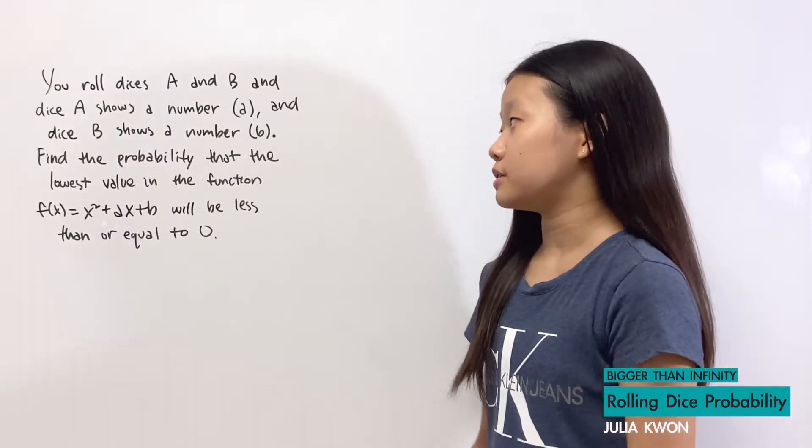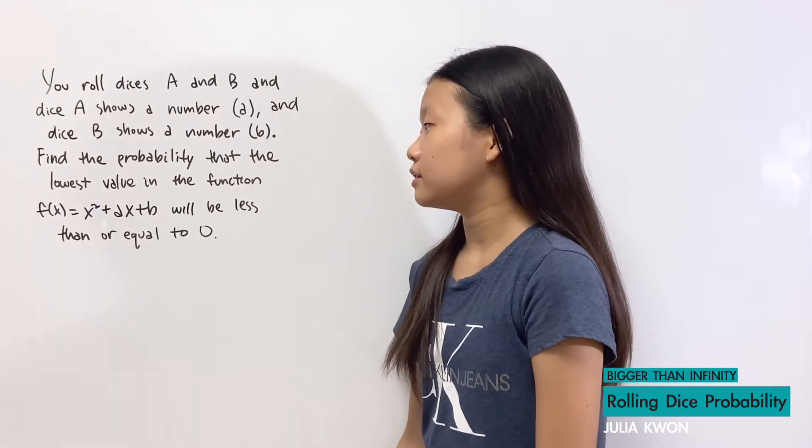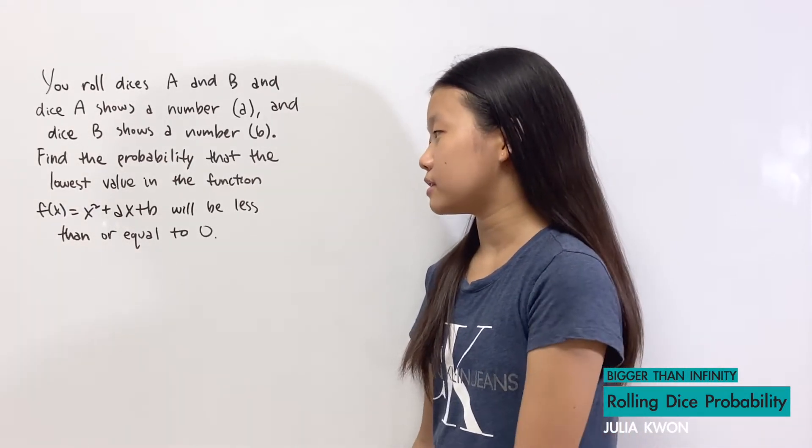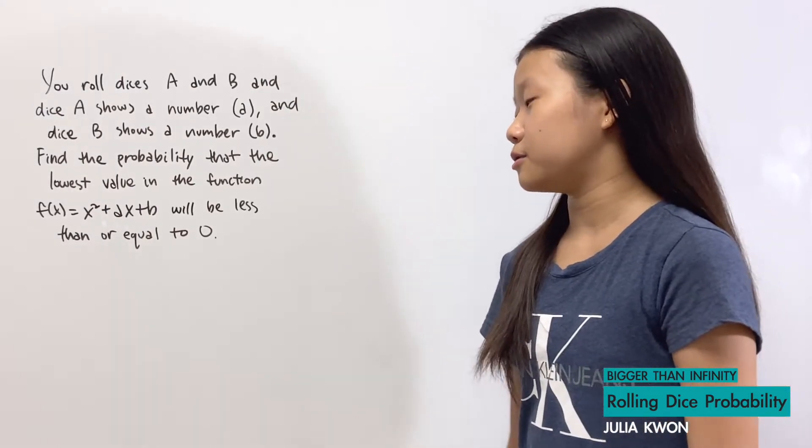Find the probability that the lowest value in the function f(x) = x² + ax + b will be less than or equal to zero.